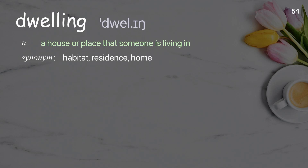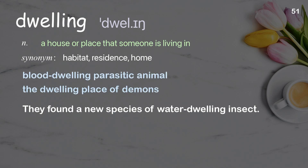Dwelling: A house or place that someone is living in. Examples: Blood-dwelling parasitic animal. The dwelling place of demons. They found a new species of water-dwelling insect.